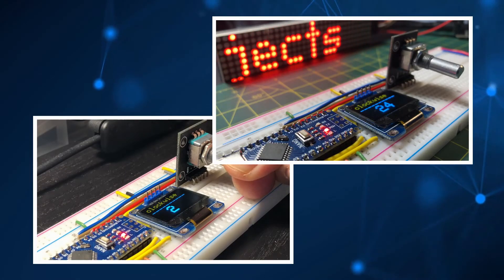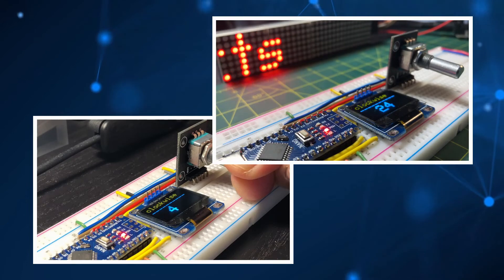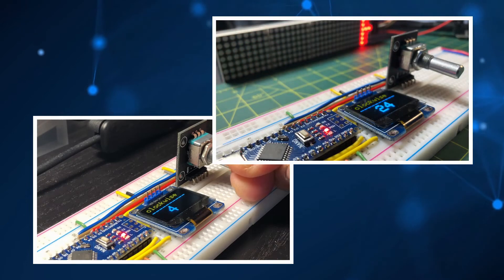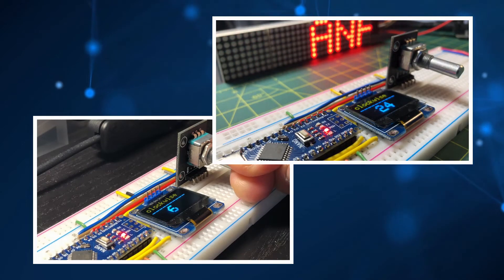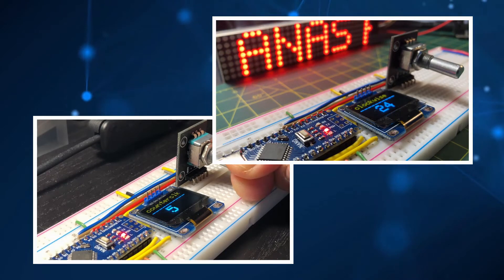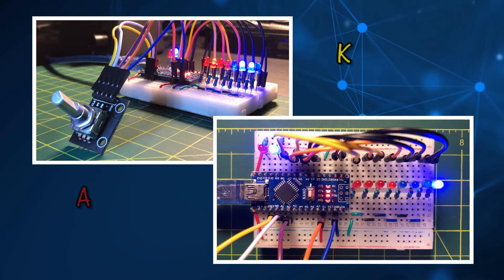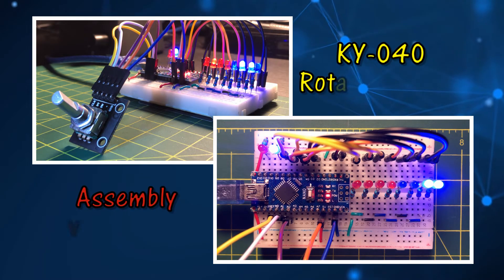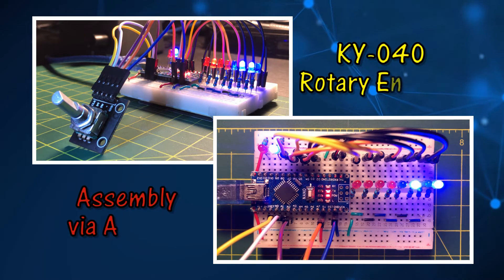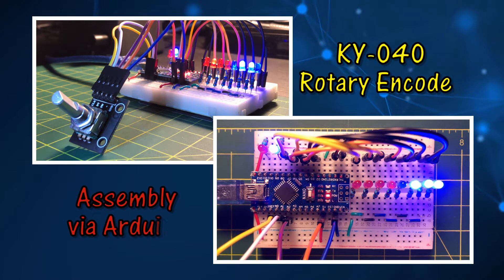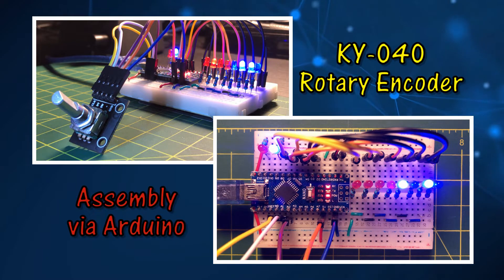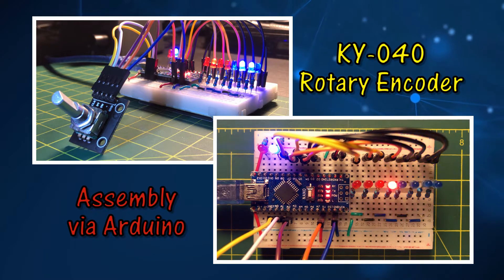In a previous video, I programmed the rotary encoder KY040 using C++. In this video, the rotary encoder is programmed using assembly language to display a binary count on a digital port.